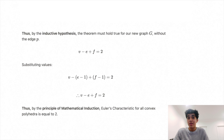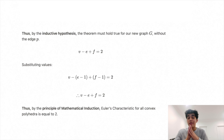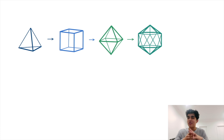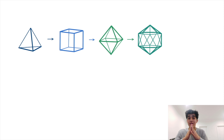Thus by the principle of mathematical induction, Euler's characteristic for all convex polyhedra is always equal to two. However, this is only one case — other surfaces such as a ring or a double torus have other Euler characteristic values. To simplify: if you take something with an Euler characteristic of two and morph it through continuous bending and stretching without tearing, the Euler characteristic remains two.